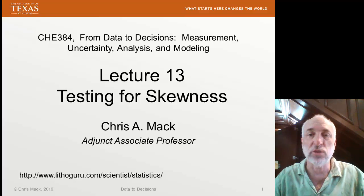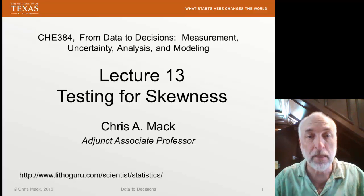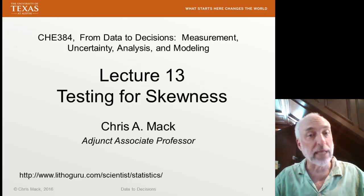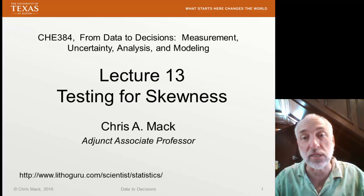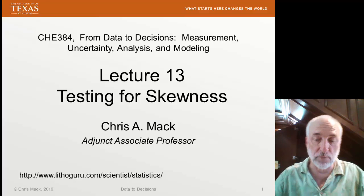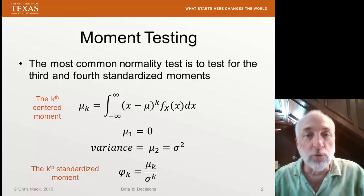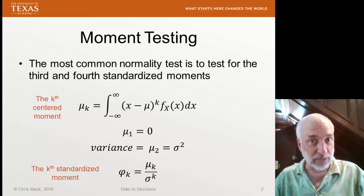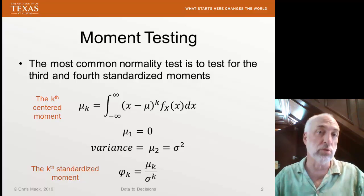A normal distribution is non-skewed — it's completely symmetric, left to right. So we'd like to test to see if we detect any skewness in our distribution. If we do, that's an indication that we do not have a normal distribution. This is a form of moment testing, and we're going to talk about two types of moments: the skewness and the kurtosis, which we'll talk about in our next lecture.